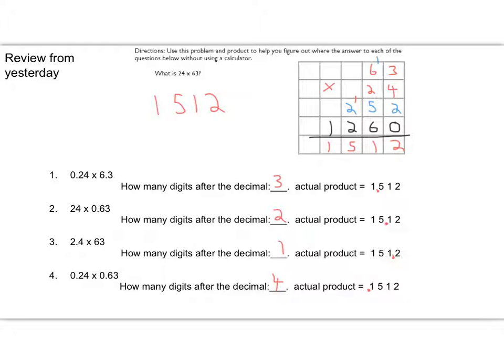And if you use estimation, you're going to find the same deal. This first answer, I know, should be something less than 6, so putting the decimal point there gives me that. This answer should be less than 24 but kind of bigger, so 15.12 makes sense there. This answer is going to be basically 2 times 63, which is going to be above 120.